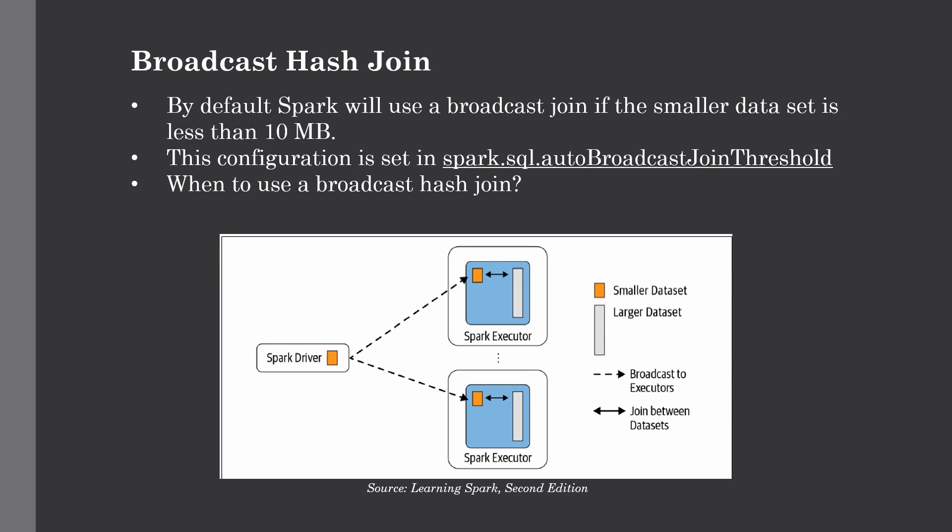This strategy avoids large data exchange to a great extent. By default, Spark will broadcast a dataset if it is less than 10 MB. You can also configure this using the property `spark.sql.autoBroadcastJoinThreshold`, increasing or decreasing the size depending on available memory on your executors and driver. A common use case is when you have a common set of keys between two data frames where one holds much less information than the other, making a merged view more optimized than conventional RDBMS joining methods.